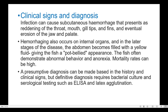Clinical signs and diagnosis: Infection can cause subcutaneous hemorrhages presenting as reddening of the throat, mouth, gill tips, and fins, and eventually erosion of the jaw and palate. Hemorrhaging also occurs on the internal organs, and in later stages the abdomen becomes filled with yellow fluid, giving the fish a pot-bellied appearance.